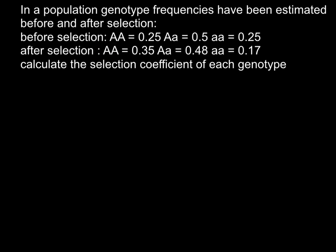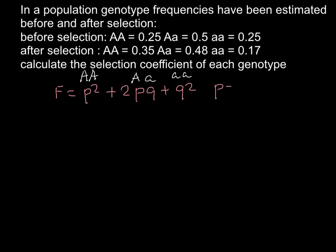In order to solve this problem, let me first remind you of the Hardy-Weinberg formula, which represents frequencies of the three genotypes. F equals p² plus 2pq plus q², where p² stands for the homozygous dominant genotype, 2pq stands for the heterozygous genotype, and q² stands for the homozygous recessive genotype. All alleles p and q, when added up, equal 1. p is the dominant allele and q is the recessive allele.